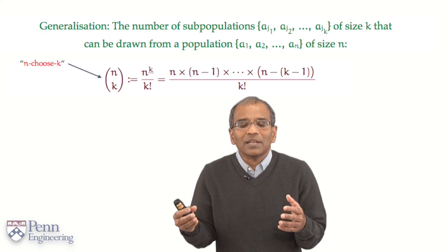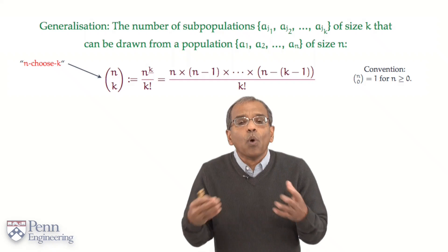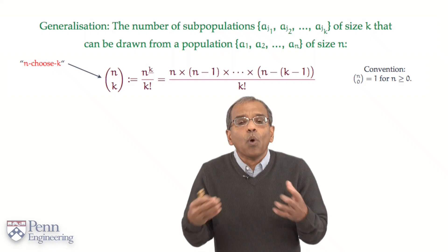Just as in the case of the factorial, we would like to make provision for when one or more of the index terms are identically 0. So as a matter of convention, we say that n choose 0 is identically 1 for all non-negative integers n.